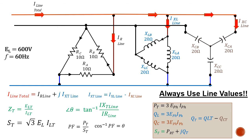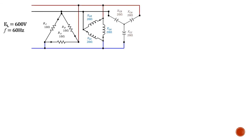So let's take a look at this example running through the numbers. Here's the circuit we were just looking at. As we go about our solution, we'll break it up into three individual parts: we'll solve for the delta-connected resistance, the delta-connected inductance, and the Y-connected capacitance. Keep in mind, if you're doing a problem with different shapes, you have to keep the principles for those shapes in mind. It could be any variation — it won't always be a delta-connected resistance, delta-connected inductance, or Y-connected capacitance.